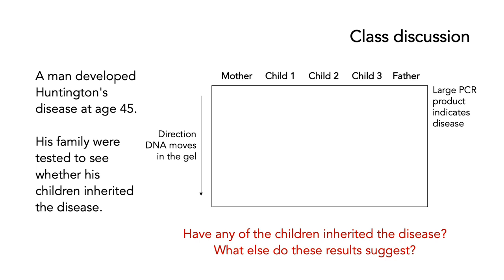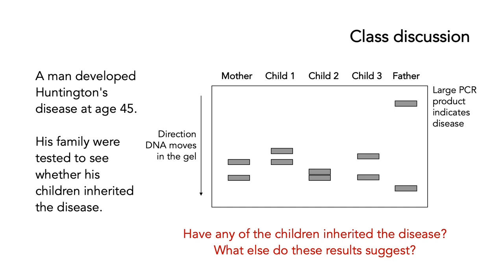Here's an example — perhaps stop the video and think about what the answer might be. Consider this scenario: a man developed Huntington's disease at age 45, and his family were tested to see whether his children inherited the disease. On the right is a picture of an agarose gel showing the mother, child one, child two, child three, and the father. DNA moves from top to bottom on this gel. The question is: have any of these children inherited the disease, and what else do these results suggest?